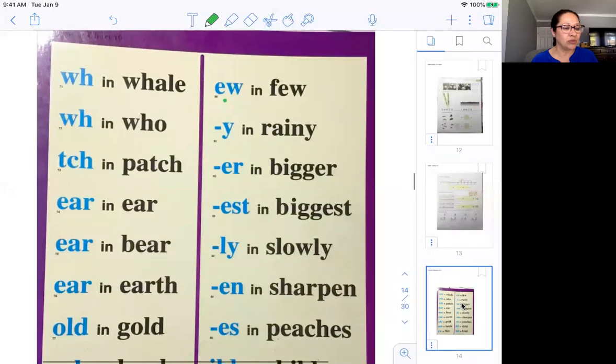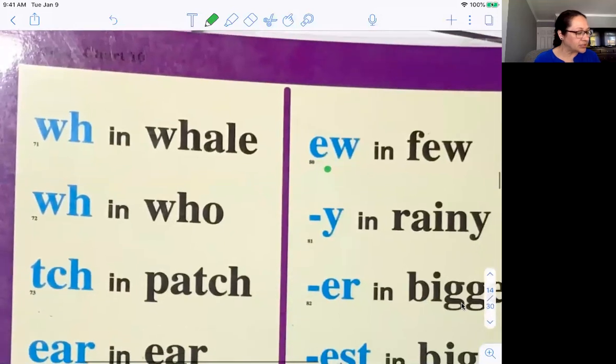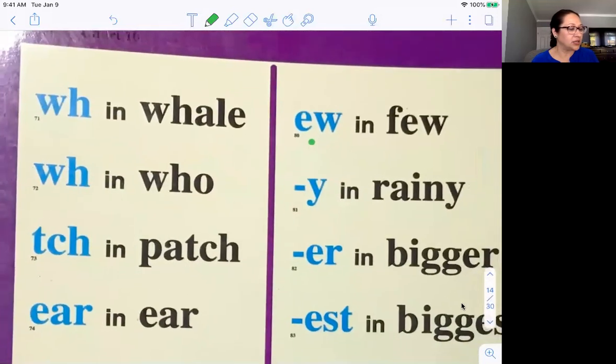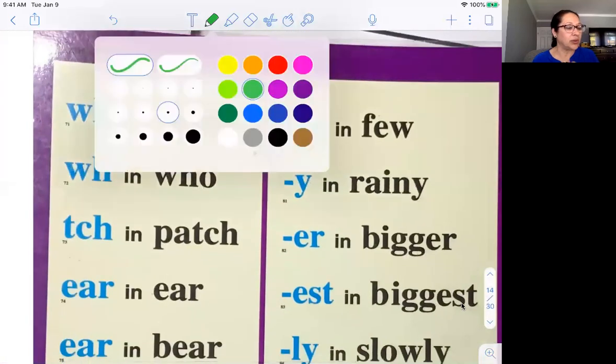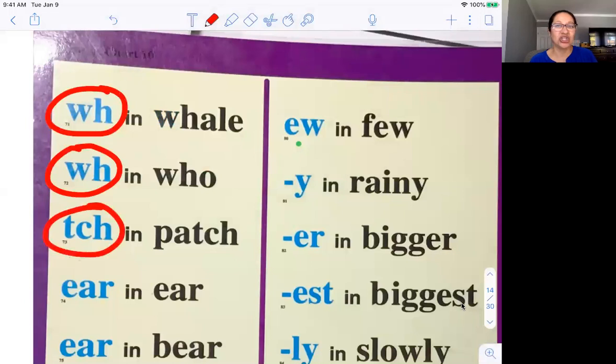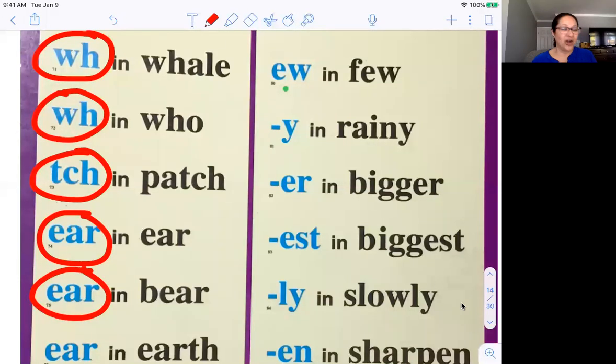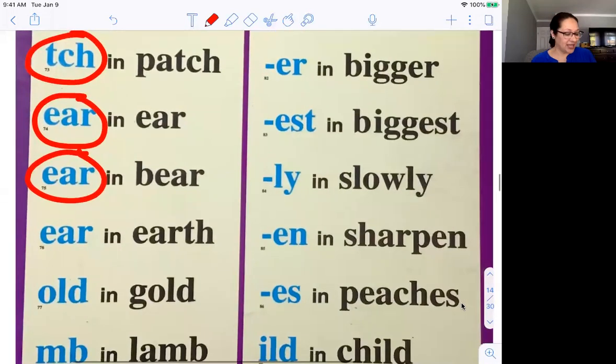Here we go. This is chart number 10, and we're going to start with wh in whale. I will go ahead and circle them as we say them. Wh in whale, W-H. Wh in who, W-H. Tch in patch, T-C-H. Ear in ear, E-A-R. Ear in bear, E-A-R. Ear in earth, E-A-R.